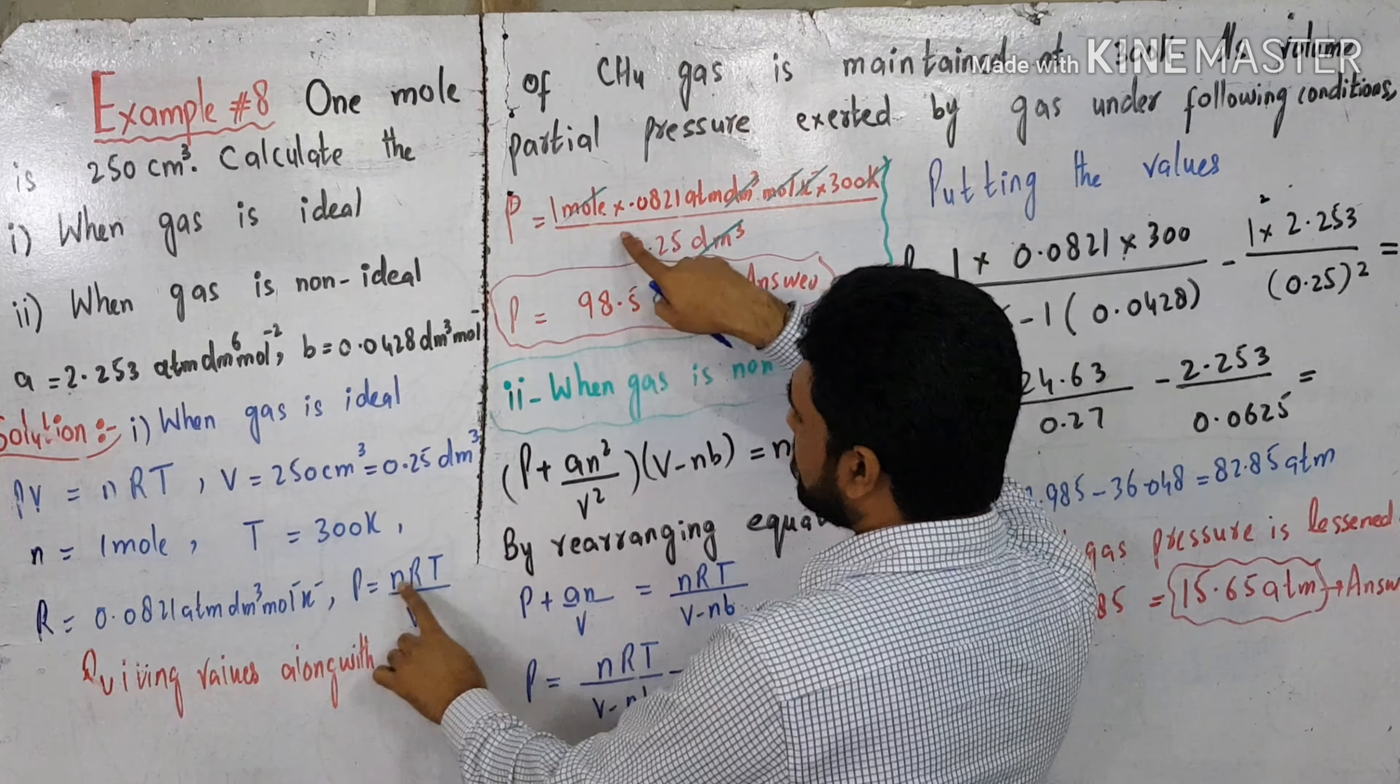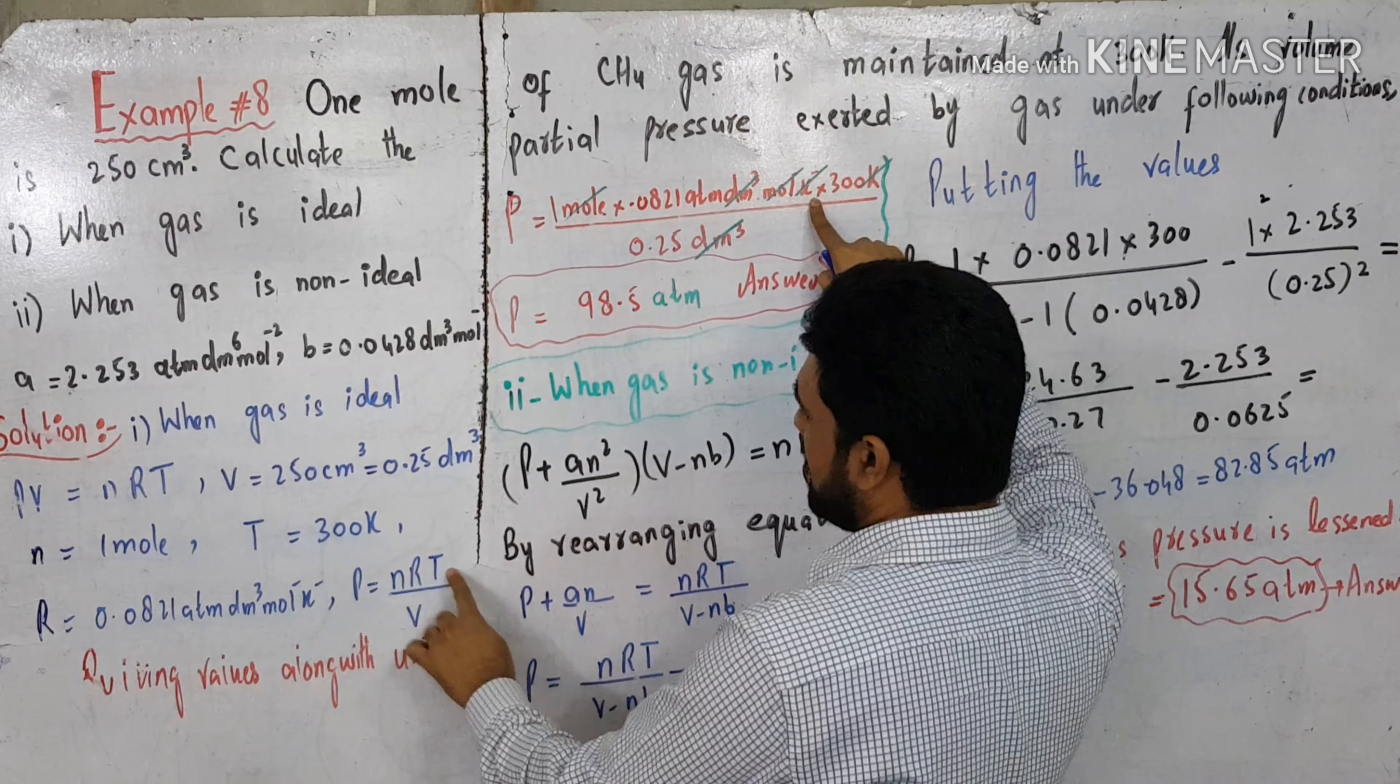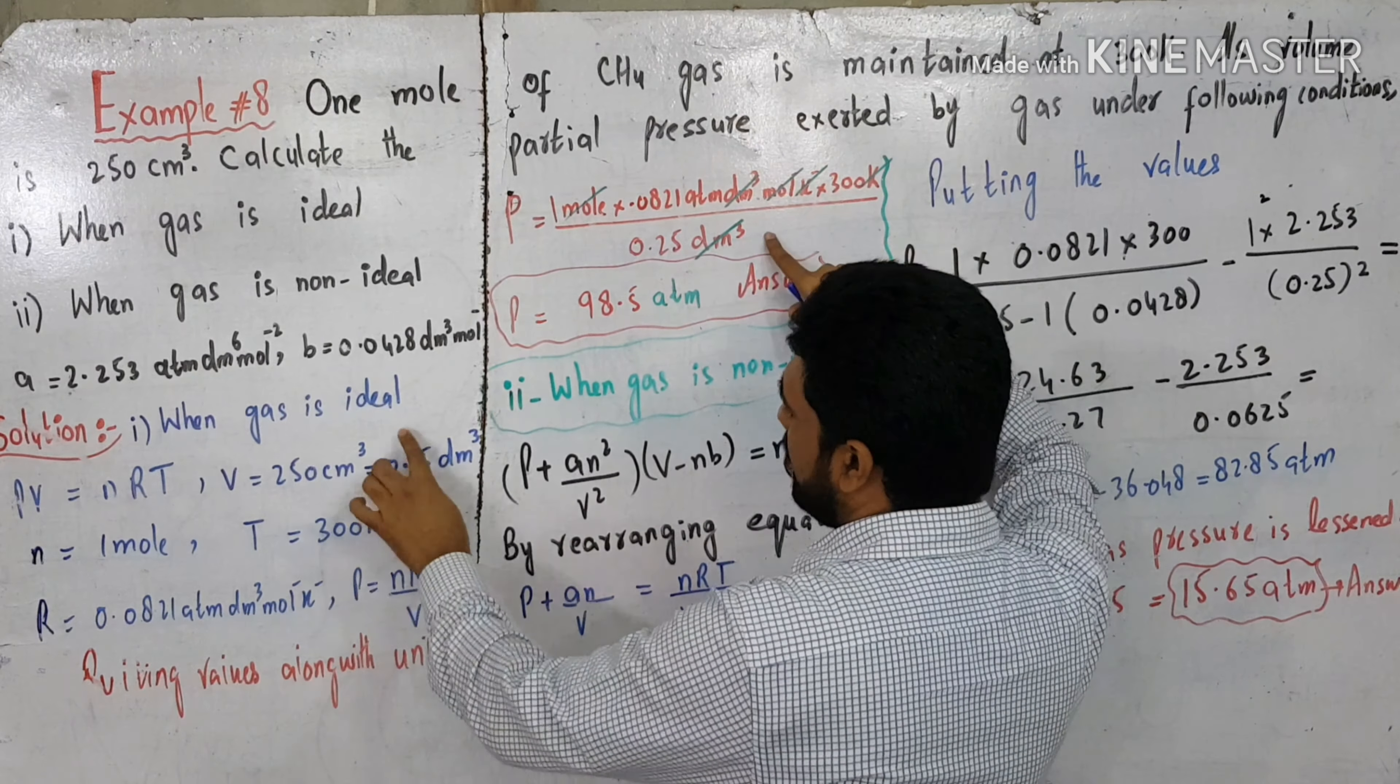Pressure in numerator: 1 mole, 0.0821 dm³ per mole per Kelvin, T is 300 Kelvin. V is 0.25 dm³. Units cancel: mole per mole, dm³ per dm³.